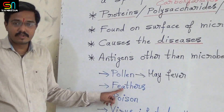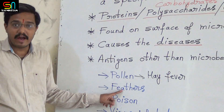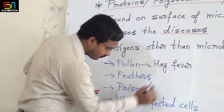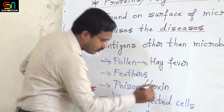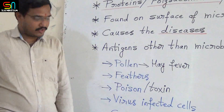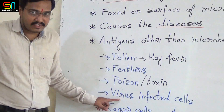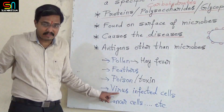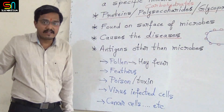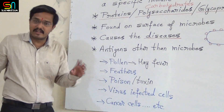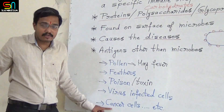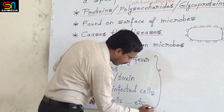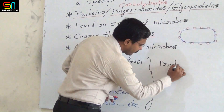Additionally, feathers of birds also act as antigens. Then, poison — or we can say toxins — also act as antigens. Then, virus-infected cells: on the surface of virus-infected cells there are antigens, so virus-infected cells act as antigens. Then, cancer cells: even on the surface of cancer cells there are antigens, so cancer cells also act as antigens. Why do all these act as antigens? Because all of these produce immune response.